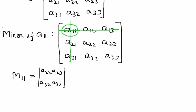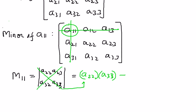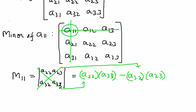Therefore, we are ready to expand this and find the determinant. The determinant is found by multiplying the elements along the major diagonal, which is A22 times A33, minus the elements along the minor diagonal, which is A32 times A23. So the minor of A11 can be written as that determinant.